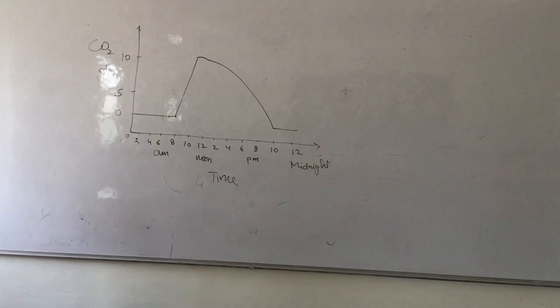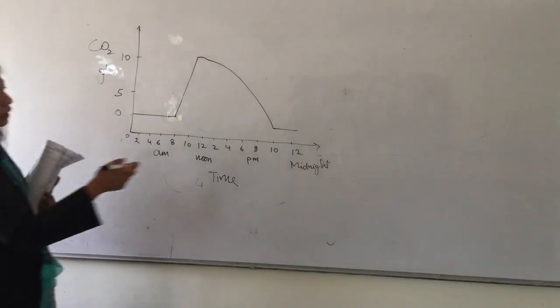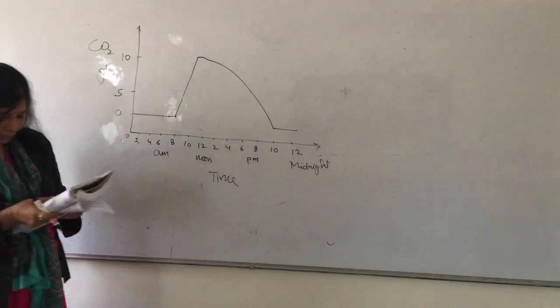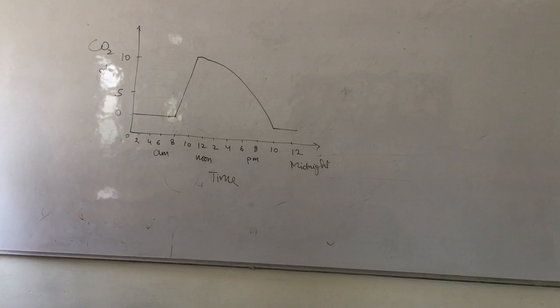First question: At what time did photosynthesis start? 6 a.m., very good. At what time was the rate of photosynthesis greatest? Noon, very good. Then at what time of the day did it get dark? 10 p.m., very good.